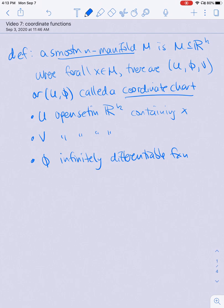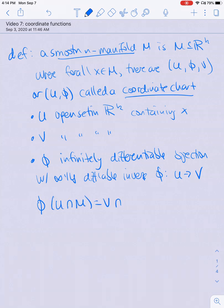It's also a bijection with an infinitely differentiable inverse, and phi sends u to R^k. In particular, phi sends u to v, and even more specifically phi of the intersection of u and M is the intersection between v and R^n hidden inside R^k by setting the final k minus n coordinates all equal to zero.